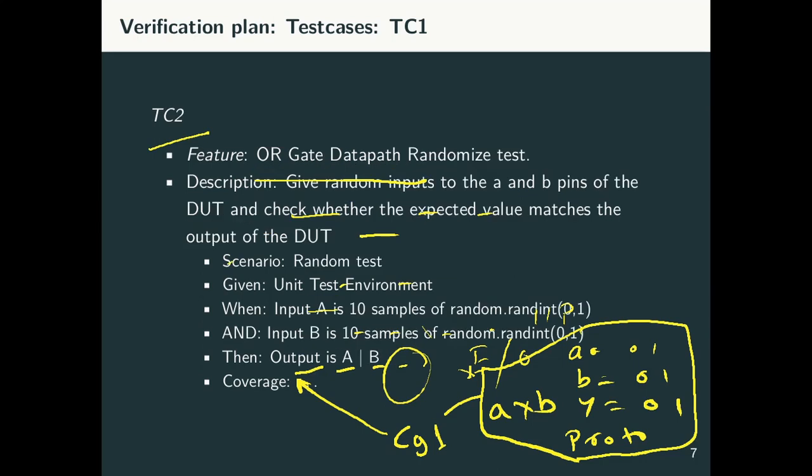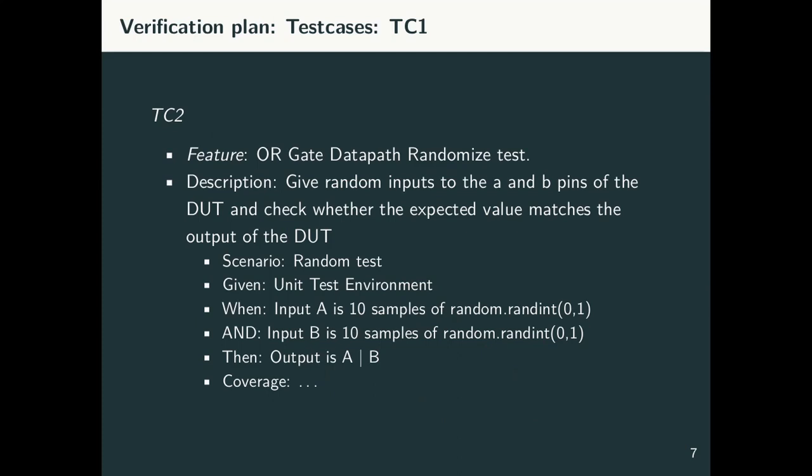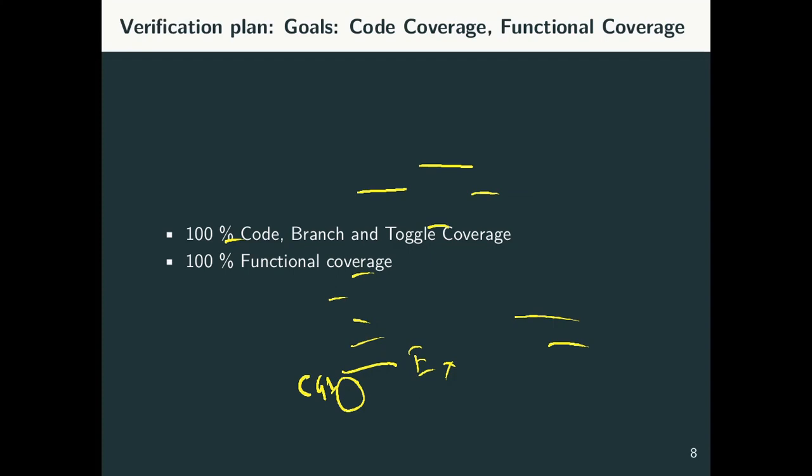Now similarly, let us say I have another test case, TC2, where data is being randomized. Similar description, random inputs to A, B, check whether expected value matches output. Scenario is random test. Given the unit test environment, input A is 10 samples selected randomly between 0 and 1. B is 10 samples selected randomly between 0 and 1. Then output is A or B. This is my expected output. And then again, the same coverage what we defined previously, we will also define for TC2. We will say that this coverage is CG1. And at this unit level environment, my goal is to get 100% code coverage, 100% branch coverage, and 100% toggle coverage. And similarly, I will be targeting 100% functional coverage.